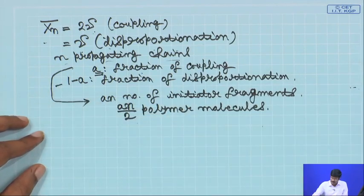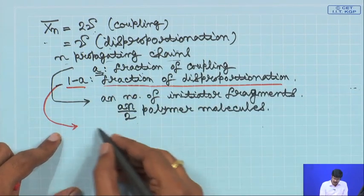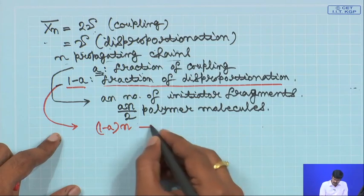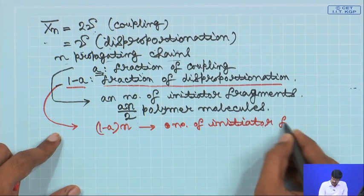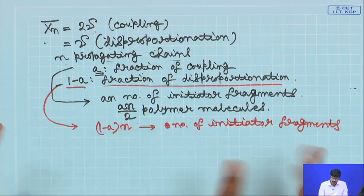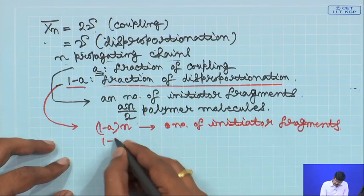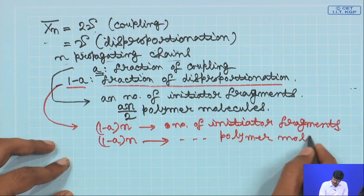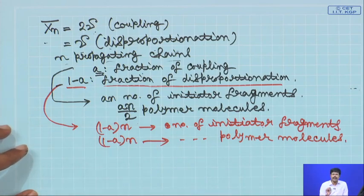Correspondingly for disproportionation, 1 minus A is the fraction of disproportionation, so the number of initiator fragments involved is (1−A)·n. If two chains terminate through disproportionation, you still end up with two dead polymer chains. So the number of polymer molecules produced from disproportionation is (1−A)·n.